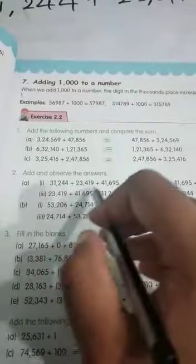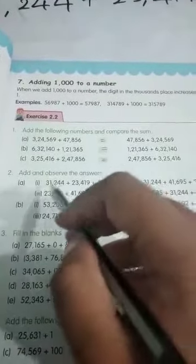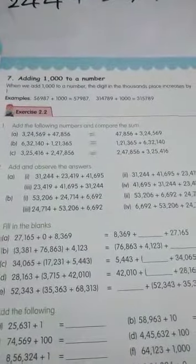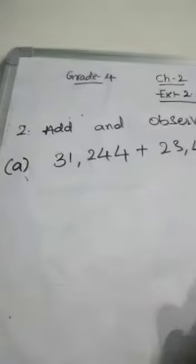So they have given here this many numbers. We have to add this number and next we have to observe the answer. So let us add this. Here is the first question here.